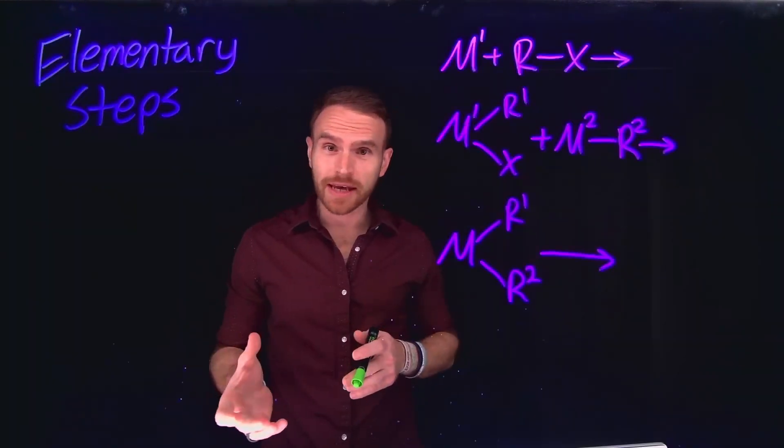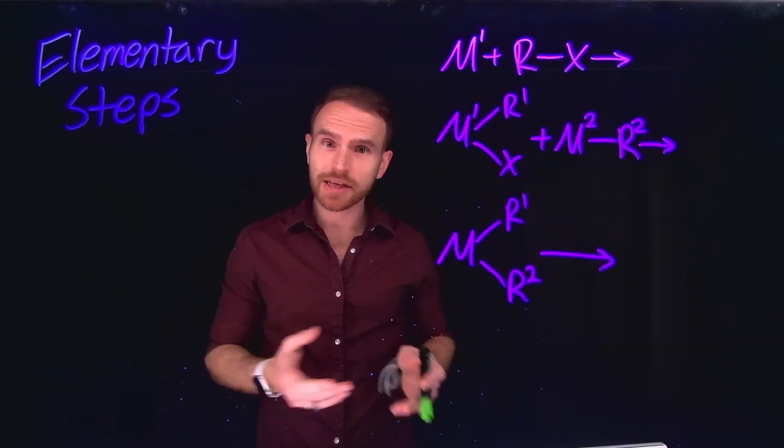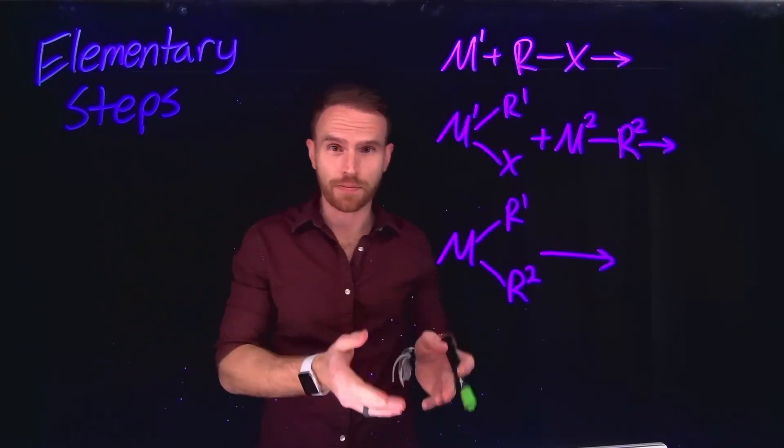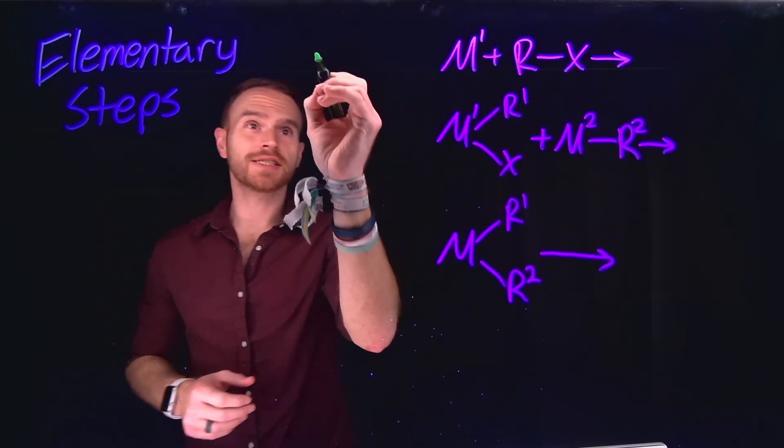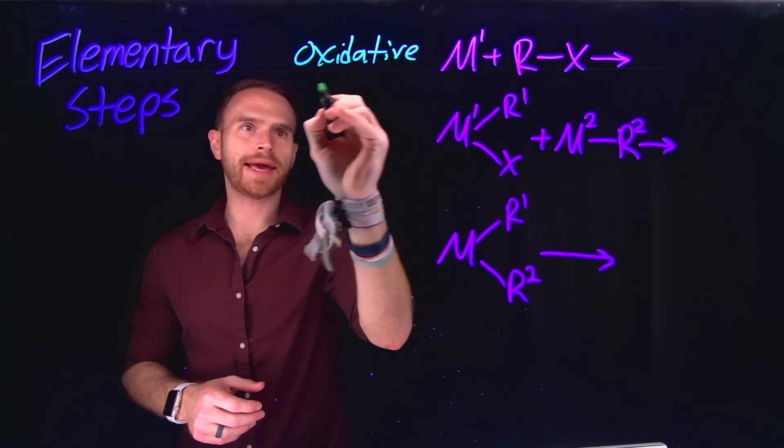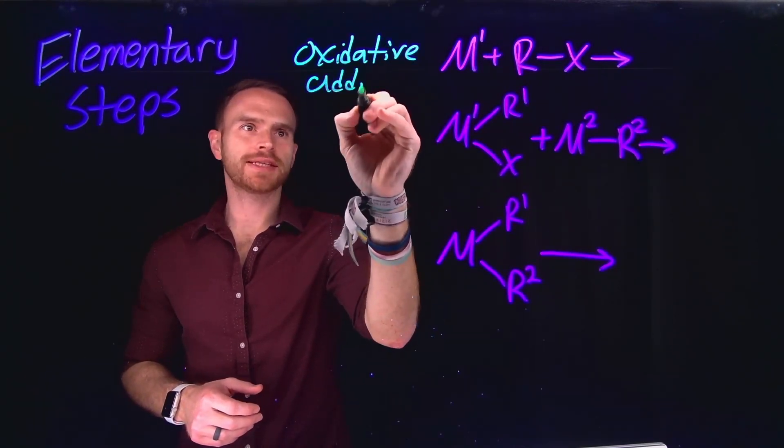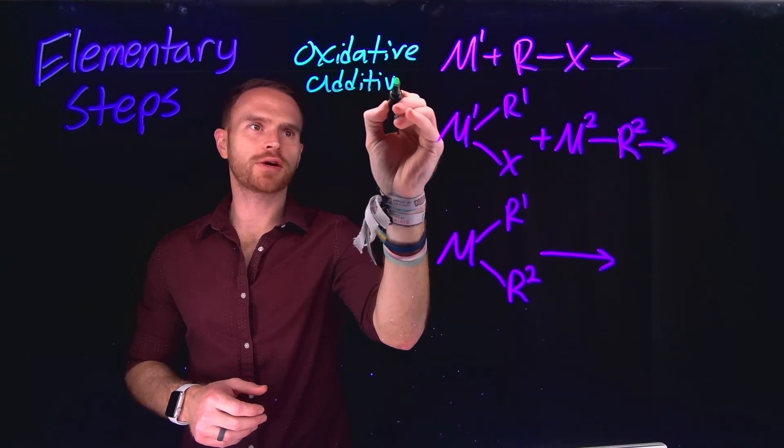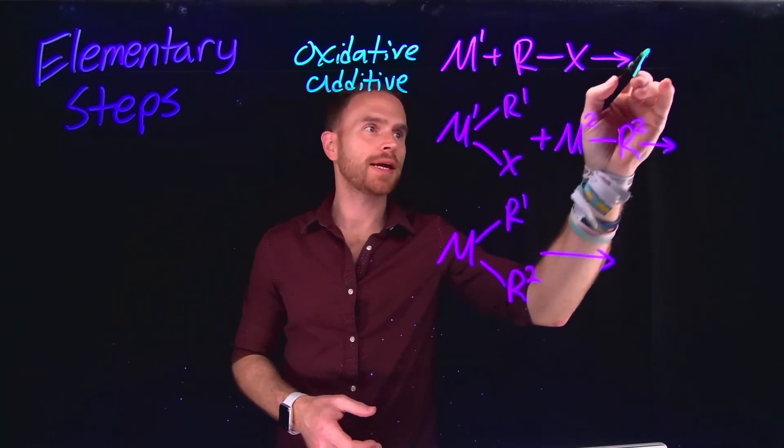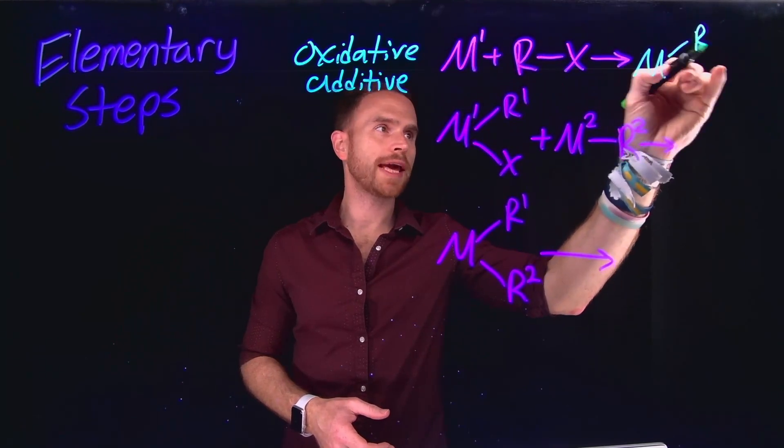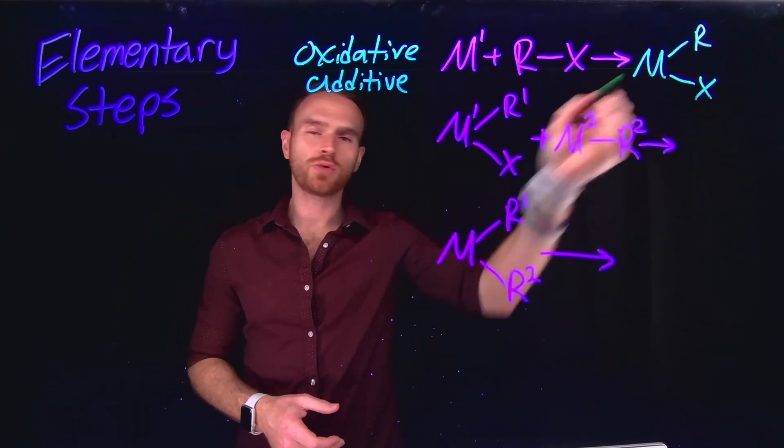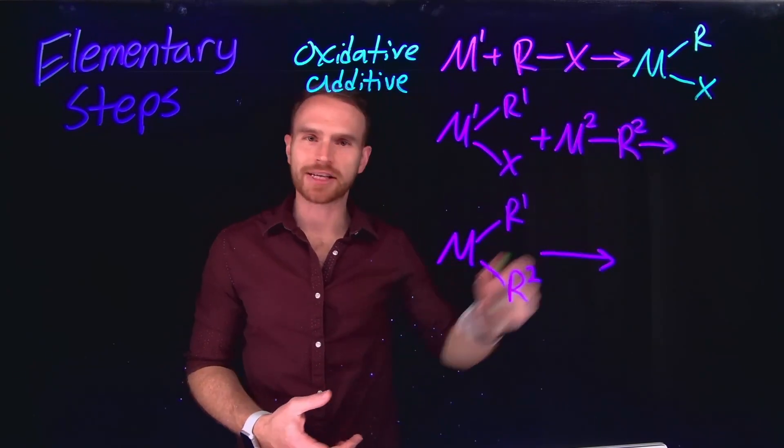First, it's key to understand that organometallic reactions typically occur via a series of elementary steps that convert reactants into products. One of those reactions is known as oxidative addition, where a metal center can insert itself into the covalent bond of some organic compound, creating two new coordination bonds between the metal and the two different functional groups that are now attached to the metal center.